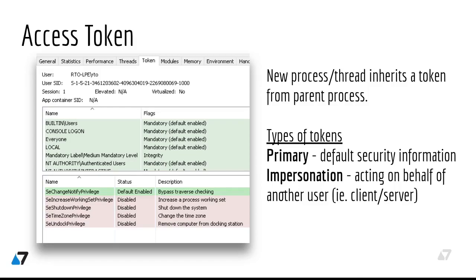Access tokens may exist as primary tokens or impersonation tokens. Primary tokens present the default security information of a process or thread, while impersonation allows an operation to be performed using an access token from another user. Impersonation tokens are typically used in client-server communication — for example, when a user accesses an SMB file share, the server needs a copy of the user's token to validate that the user has sufficient permissions.